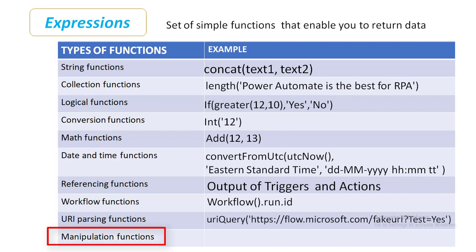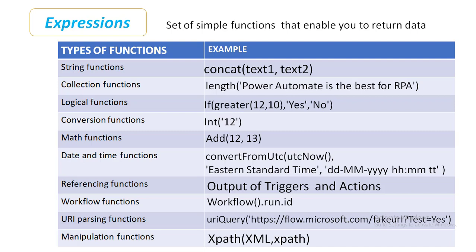Finally, we'll have manipulation functions. Manipulation functions are used to work with specific objects in your flow. You can do things such as find the first non-blank value, work with properties, or find expert matches. These functions are typically used for JSON or XML node evaluation. These are all 10 different categories of functions available in expressions.